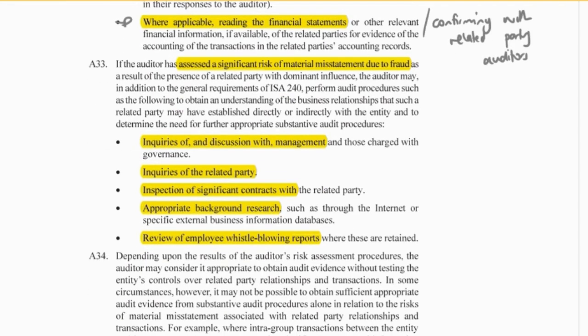Further to that, we can do inquiries with the related party and look at the contracts. When looking at the contracts, you're testing for accuracy, cutoff, and classification — get into the details to make sure the transaction is recorded correctly. Background searches could also help you, and another example is reviewing whistleblowing reports.